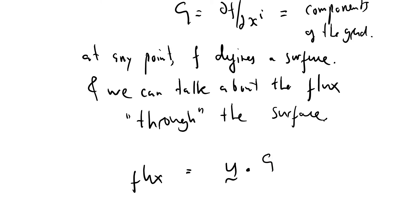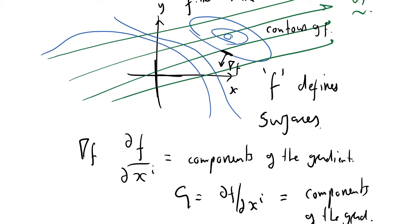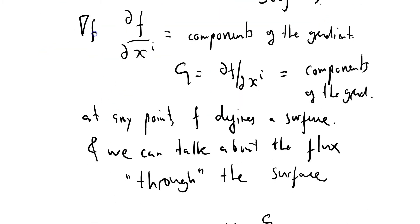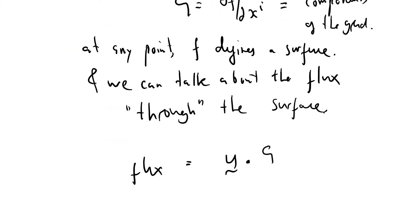Actually, it isn't the gradient, because what I've neglected to mention here, I've not neglected to mention it but I've not emphasized it, is that I don't really care how close together these contour lines are. They could be really close together or really far apart, and I don't care. I'm just interested in the direction that they've got. So it's not u dot g, it's u dot ĝ.